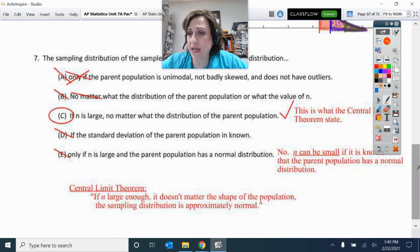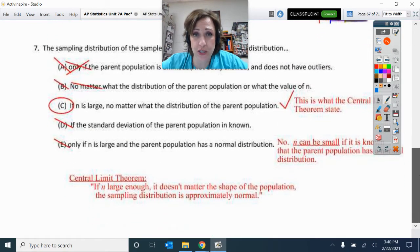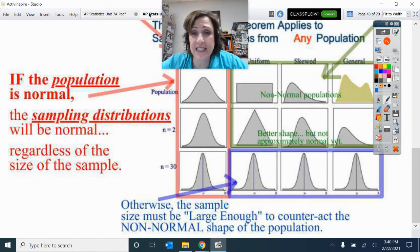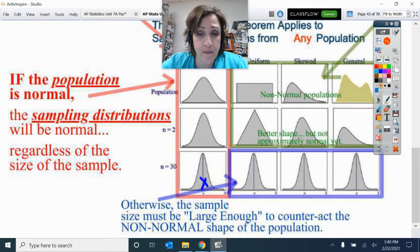This first question is talking about the shape of the sampling distribution. So our last unit, 6, referenced sampling distributions. Here we have sample means, x-bars.